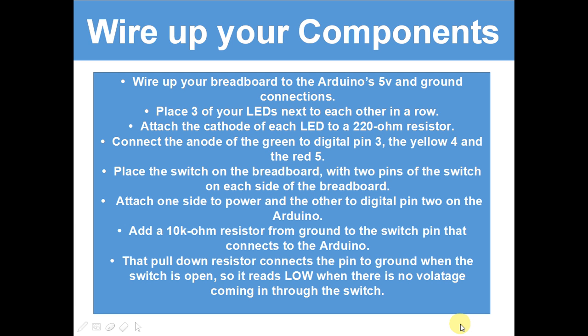Right, now we need to wire up the components. I've got a diagram on the next slide but I want to just talk to you about it first. You need to wire up your breadboard to the Arduino's 5V and ground connections. Place three of your LEDs next to each other in a row. Attach the cathode of each LED to a 220 ohm resistor going to ground. Connect the anode of the green to digital pin 3, the yellow to 4, and the red to 5.